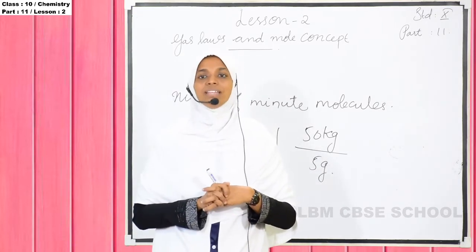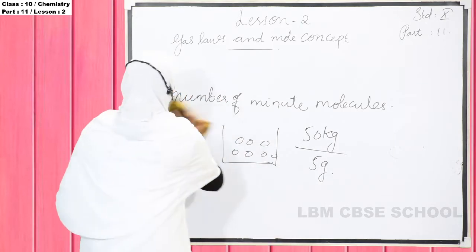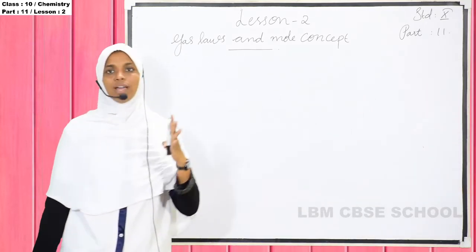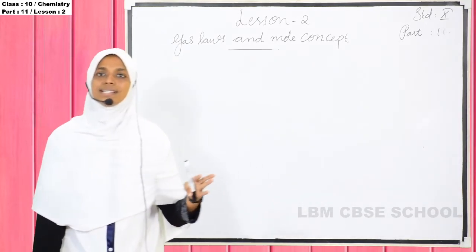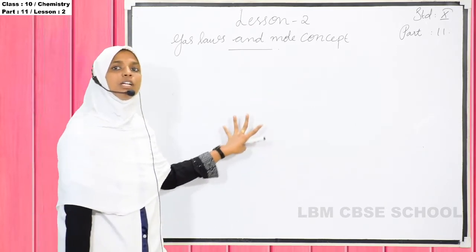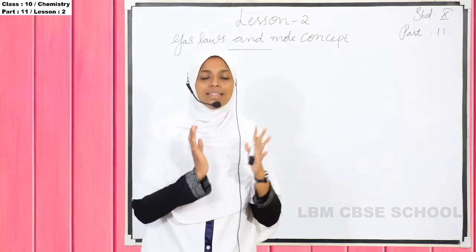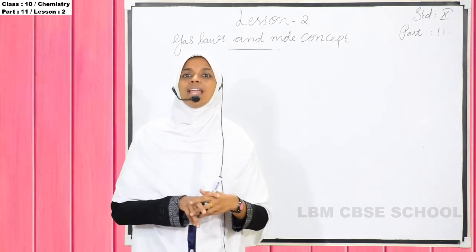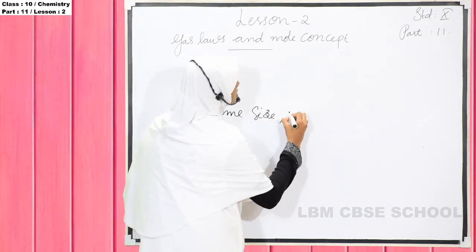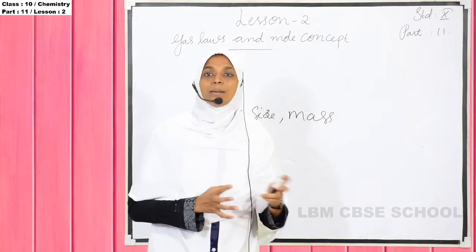We can find the number of particles if they are the same size and mass. If a particle has the same size and mass, we can determine the number by dividing total mass by mass per particle. If particles have the same size and mass, we can calculate the number of molecules easily.